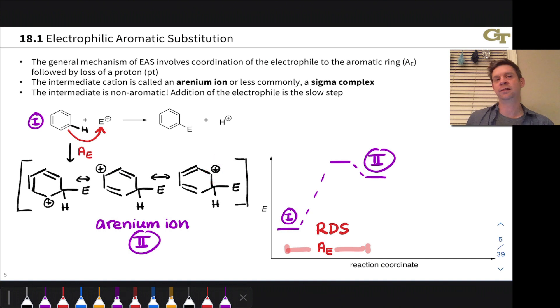So the positive charge is delocalized over this five-atom conjugated system, right? Five-atom pi system right here.